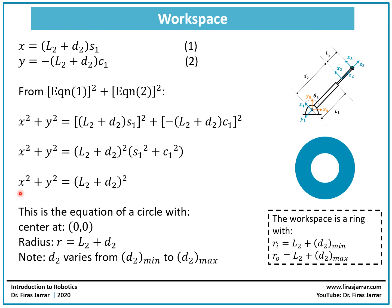The result is the equation of a circle with center at the origin and radius equal to L2 plus d2. However, since d2 is a variable joint variable, the radius is variable, making it a ring. The minimum radius is L2 plus d2 minimum, and the maximum radius is L2 plus d2 maximum — unless the minimum value of d2 is minus L2, which would cancel out and give a full disk.